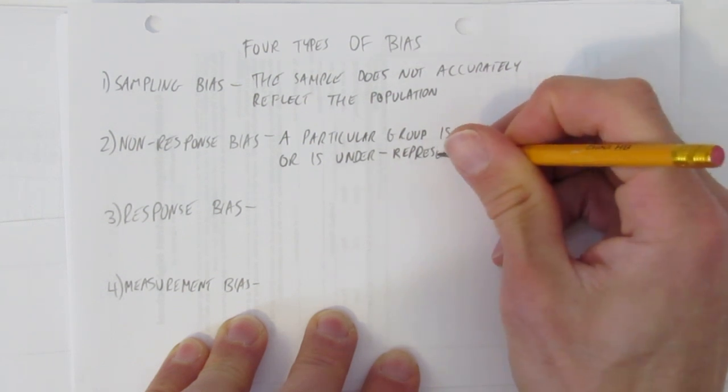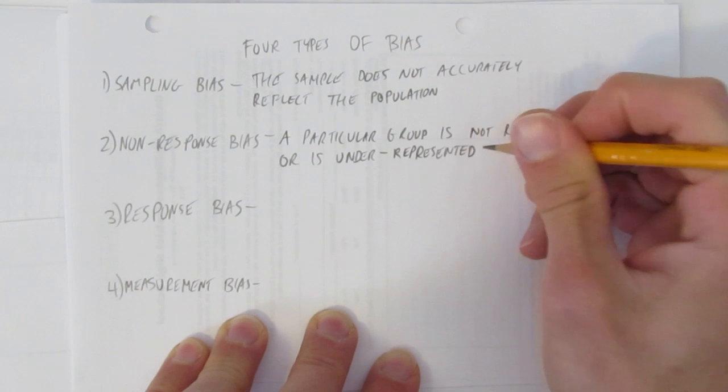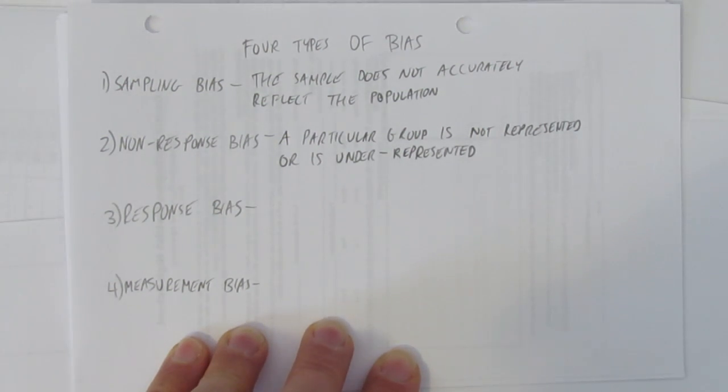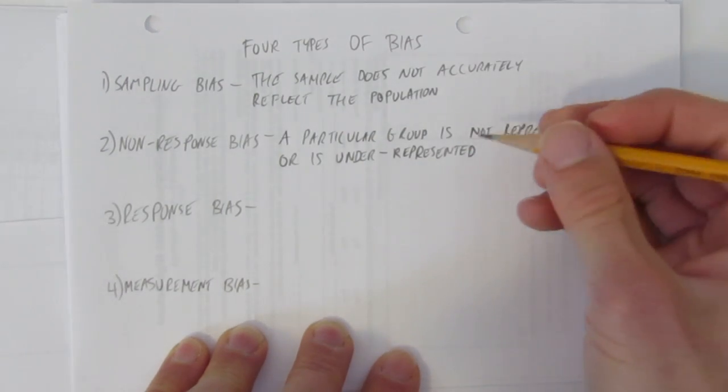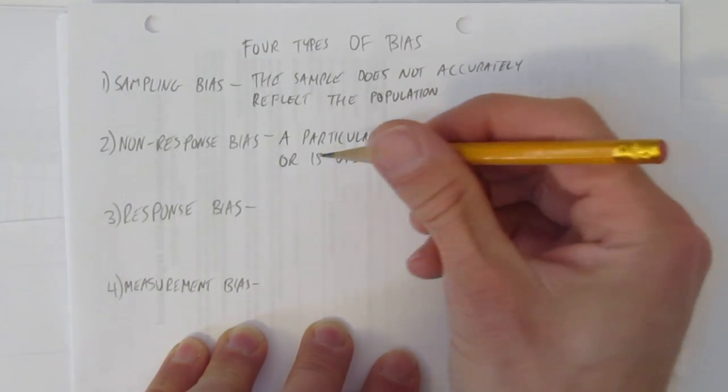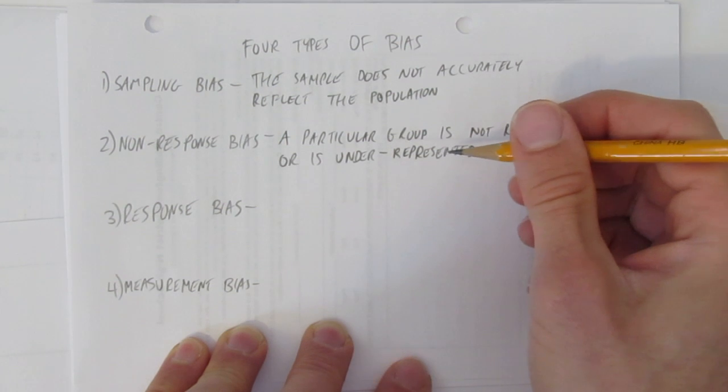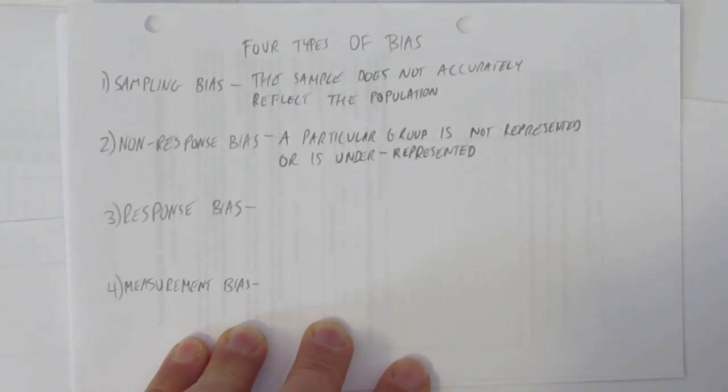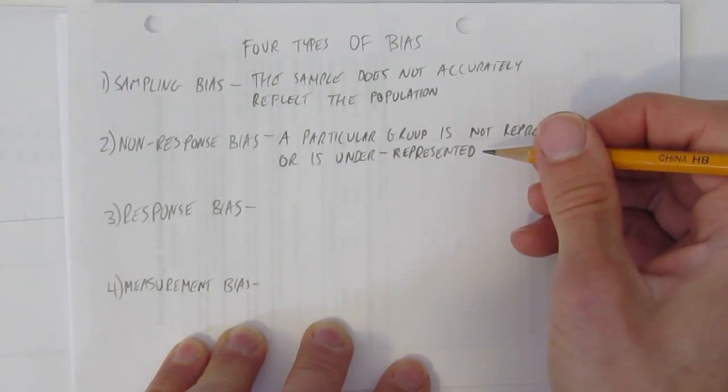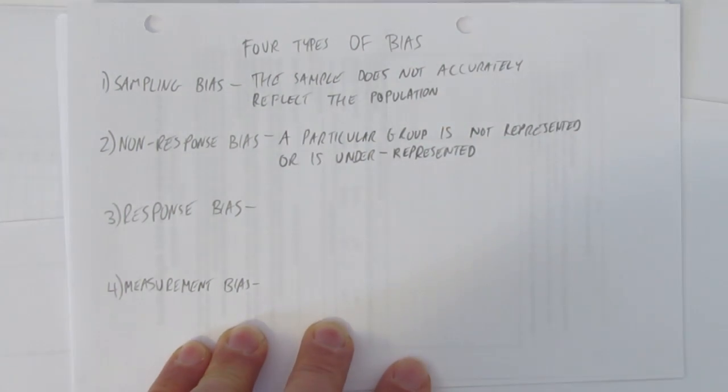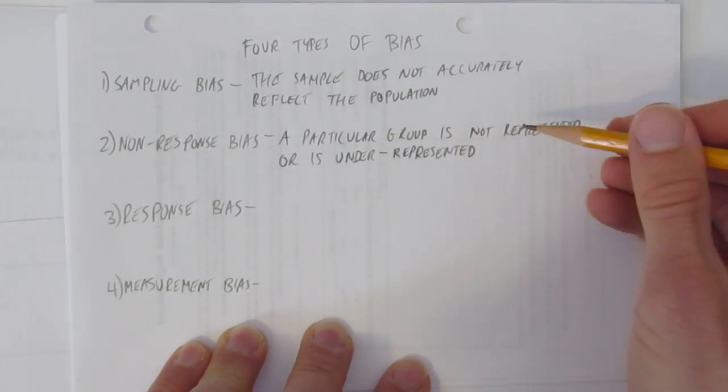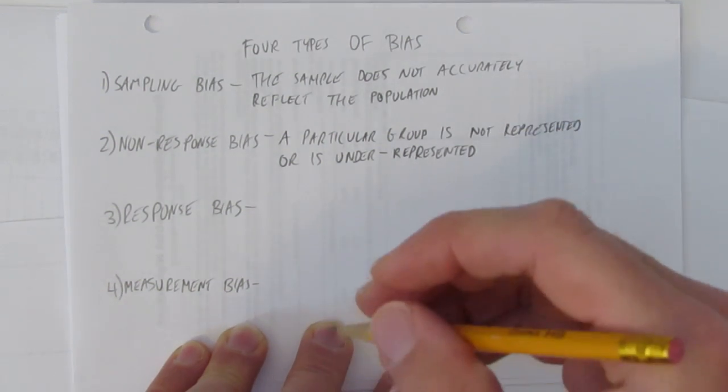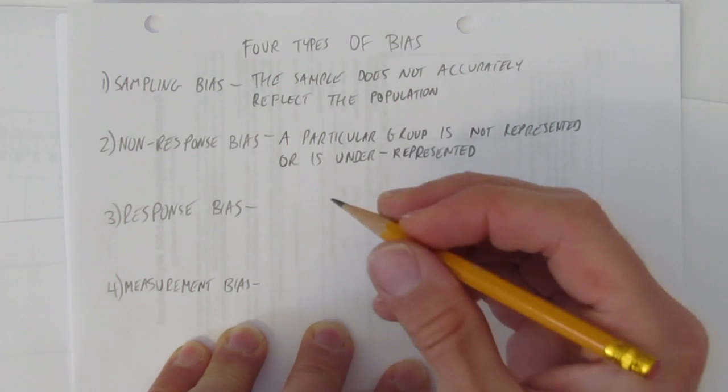Non-response bias happens when you ask a question that someone might be afraid to answer honestly, so they don't respond. They choose not to respond because they're afraid of giving their answer - they're either shy, embarrassed, or don't want to say. For whatever reason, that group is not well represented or not represented at all.